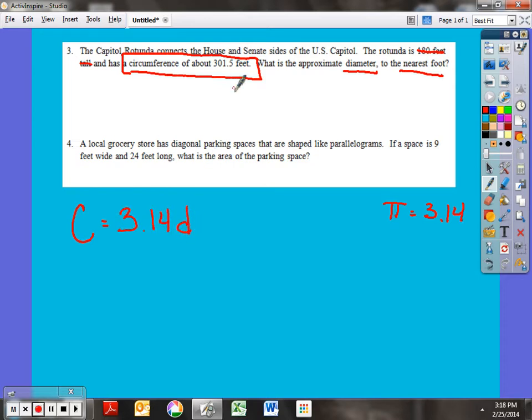Now looking at this problem, it says circumference is 301.5 feet. Well, I'm going to substitute that right in where I see the C, because the C stands for circumference. So I'm going to substitute in 301.5. I'm going to make that equal to 3.14 times D. And the D stands for diameter. Well, now we have an equation.